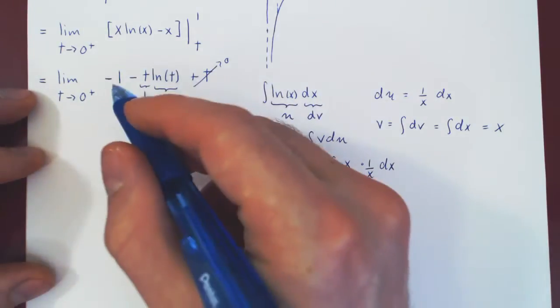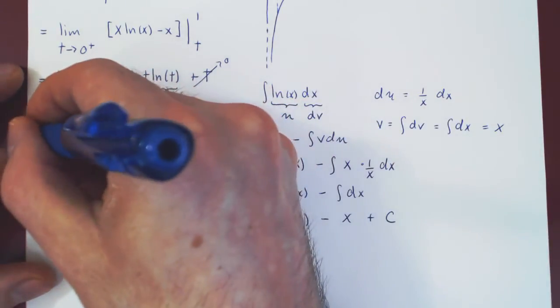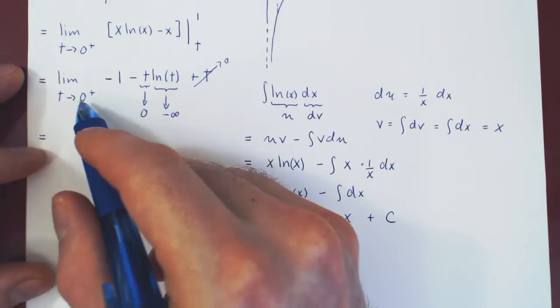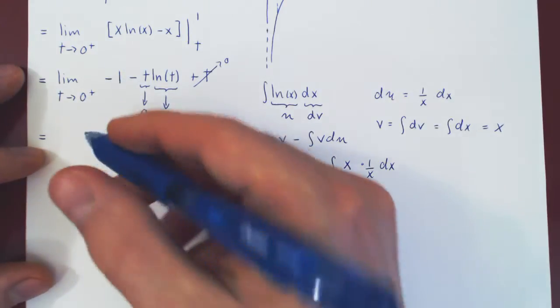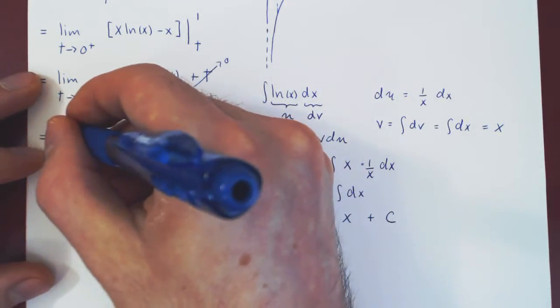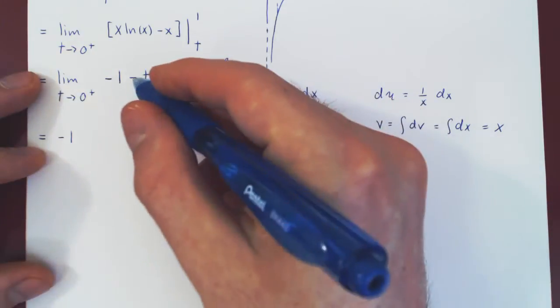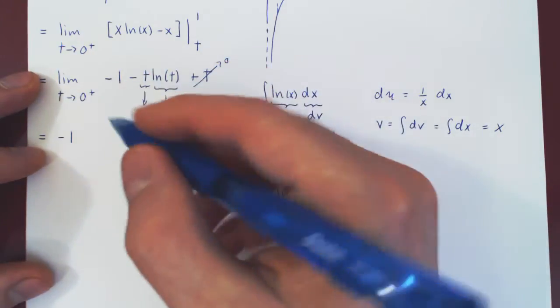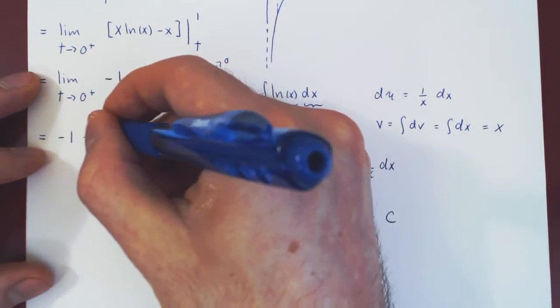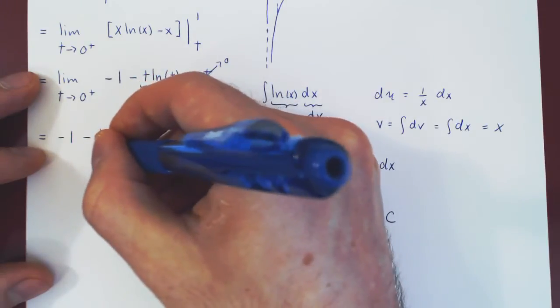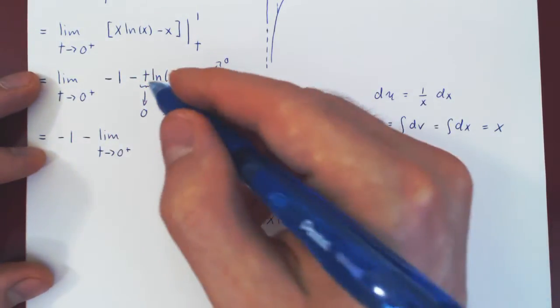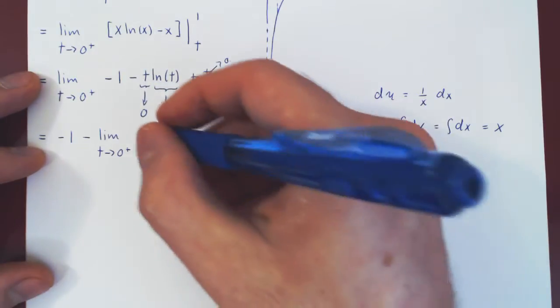Well, one thing we'll also separate is the negative 1. As t approaches 0, negative 1 is always negative 1. We can pull this out of the limit. And if we also factor the negative, so negative the limit, as t goes to 0 from the right, and as we have just said, this leaves us with t times the ln of t.